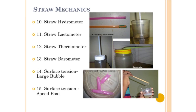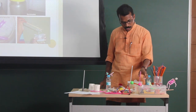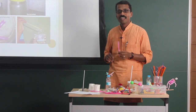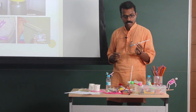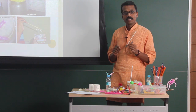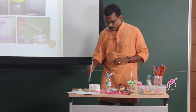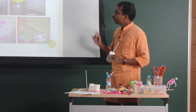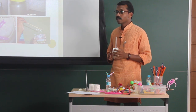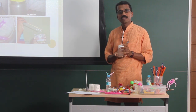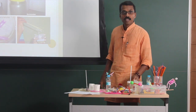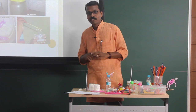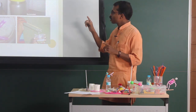There are some measuring instruments: a straw hydrometer that can measure relative density, and a lactometer — a type of hydrometer — to find the purity of milk. A straw thermometer: put a drop of water in a straw and if it is heated, the rise of the water drop shows the temperature difference. Also a barometer made with a rubber strip and a straw piece.